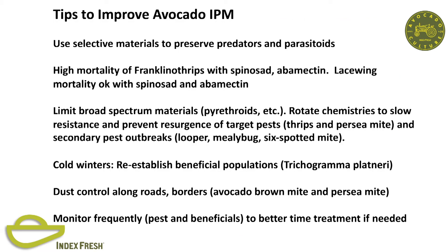Ways to improve IPM or to get there: use selective materials. Be aware that the materials you're using may have an effect on the beneficials. Limit your broad-spectrum materials—the pyrethroids. Rotate your chemistries to slow resistance and to prevent resurgence and secondary pest outbreaks like looper. Be aware that cold winters can cause problems—you may have to reintroduce some of your more effective beneficials. Keep the dust down along the roads. Monitor frequently to better time your treatment.